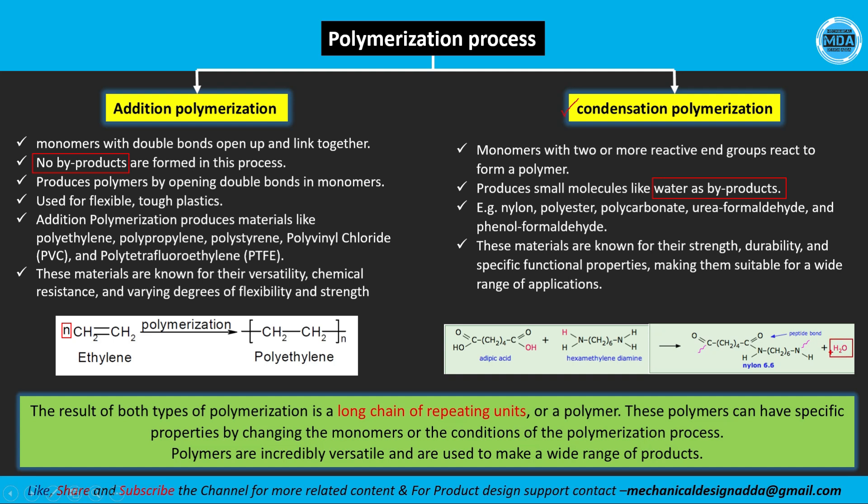In addition polymerization, the materials we get include polyethylene, polypropylene, polystyrene, PVC, and PTFE. In condensation polymerization, we get materials like nylon, polyester, polycarbonate, urea formaldehyde, and phenol formaldehyde. Addition polymerization gives flexible and tough material properties, while condensation polymerization gives good strength and durability. These properties vary depending on the monomers and additives used in the polymerization process.